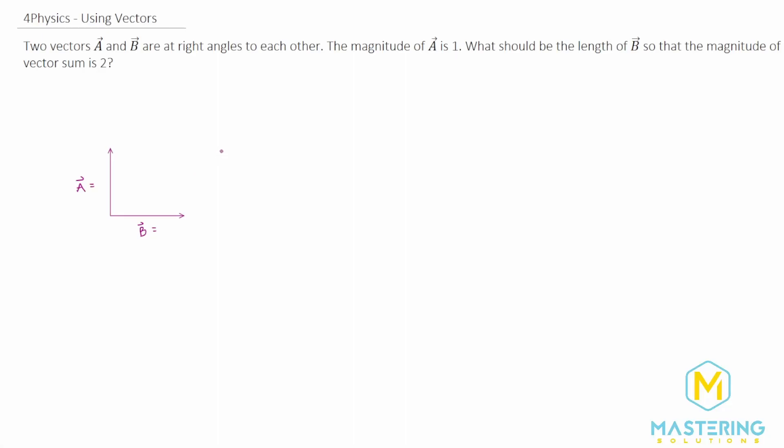Welcome to Mastering Solutions. In this problem about using vectors, they tell us that two vectors a and b are at right angles to each other, which I've drawn right here. And then they tell us that the magnitude of vector a is one.